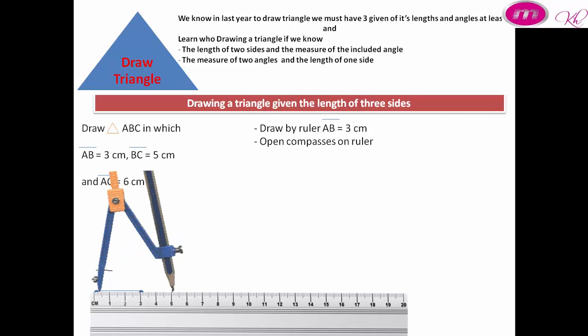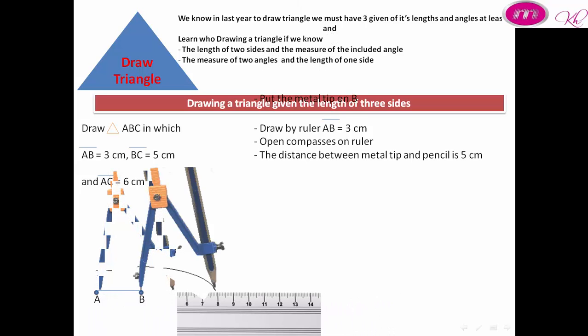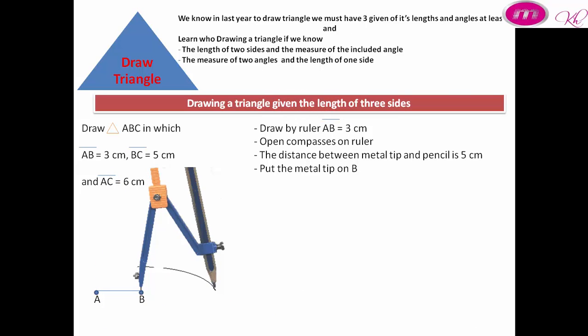Then open the compass on the ruler. The distance between metal tip and pencil is 5 centimeters. Put the metal tip on B. Swing the pencil around to draw an open curve.